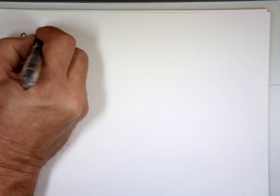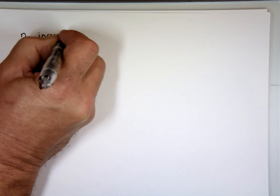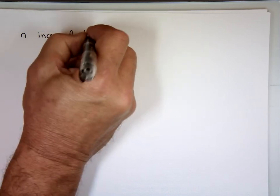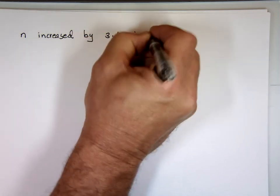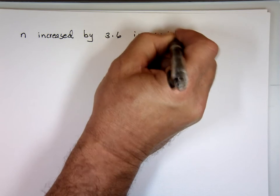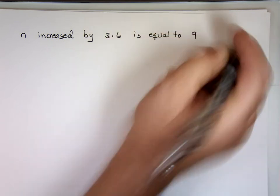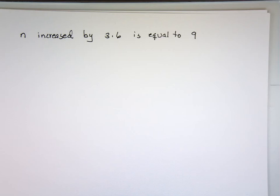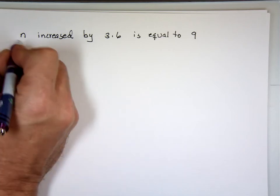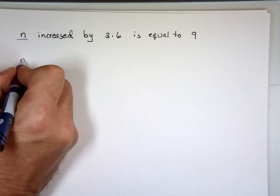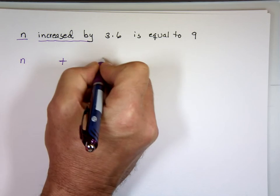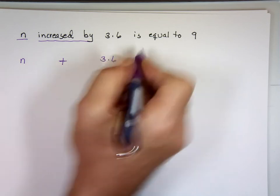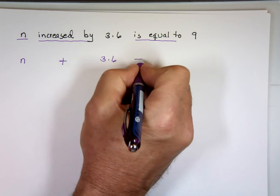N increased by. So I'm even telling you what variable to use. Increased by 3.6 is equal to 9. There's this one. They tell us the variable N increased by. What does that mean? Add 3.6 is equal to. What is that? Equals 9.